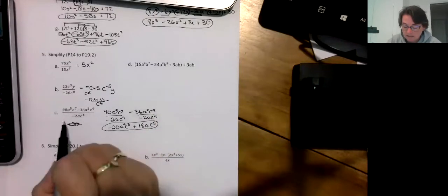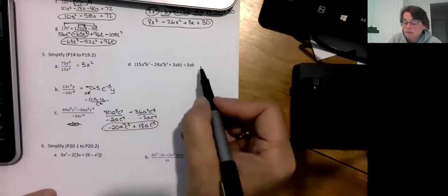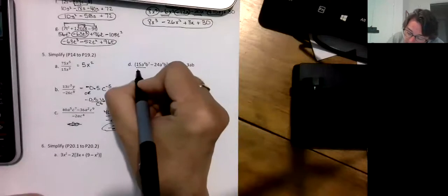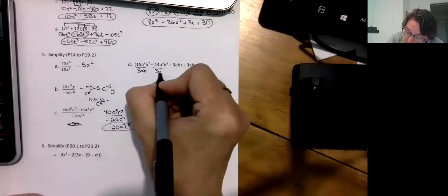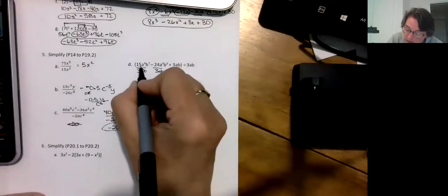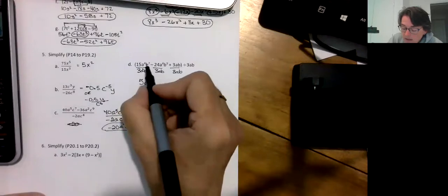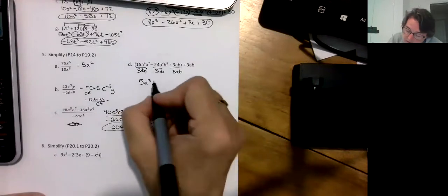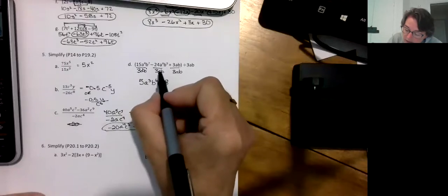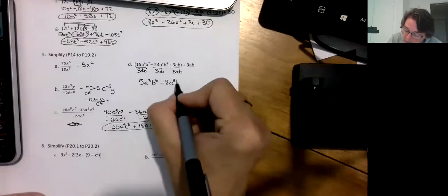Another way you can write a division question instead of writing it in fractional form is to write it with brackets and a division sign. This one's nicer because honestly from an instructor point it's easier to type, but I still do the same thing and actually it's a little bit easier here. So 15a⁴b⁷ divided by 3ab is 5a³b⁶. Minus 24a⁴b⁹ divided by 3ab is minus 8a³b⁸.